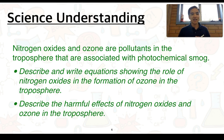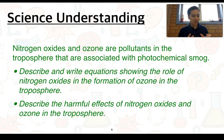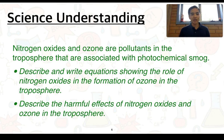Our second science understanding: nitrogen oxides and ozone are pollutants in the troposphere associated with photochemical smog. Two very important points to be familiar with are: describe and write equations showing the role of nitrogen oxides in the formation of ozone in the troposphere, and describe the harmful effects of nitrogen oxides and ozone in the troposphere.